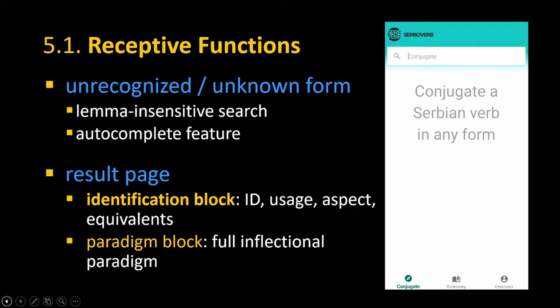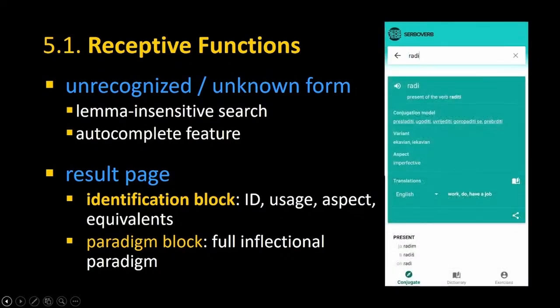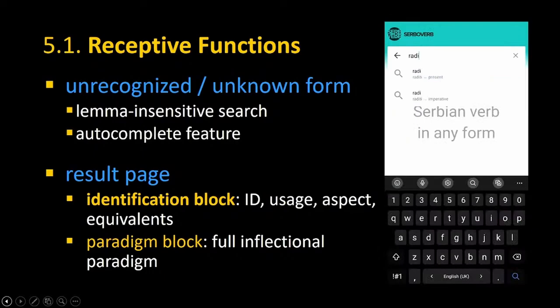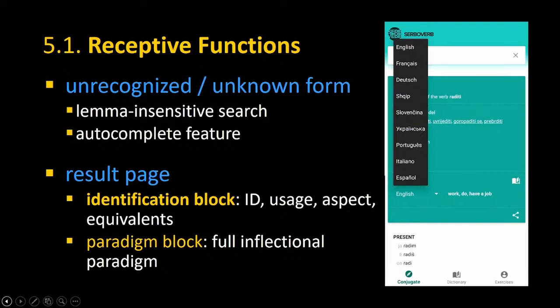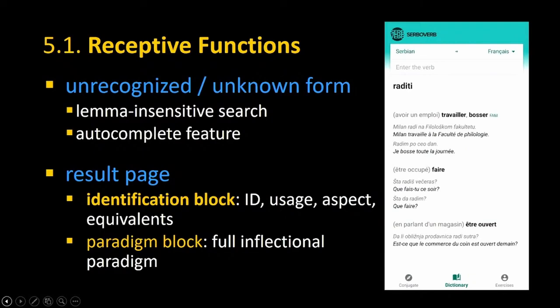The tool supports receptive functions: when a user comes across an unknown or unrecognized word form, they can type any word form, and get a result page with an autocomplete function. There is first an identification block — the most important for receptive functions — where the user gets identification of the verb and equivalents in their languages. They can then view the paradigm block to find where their form sits in the system, and search for more information in the dictionary part.